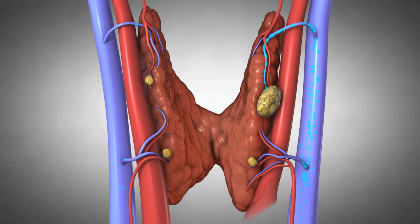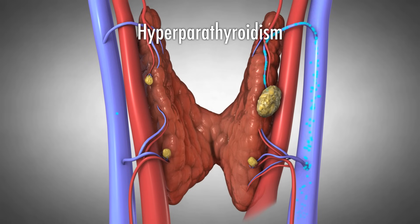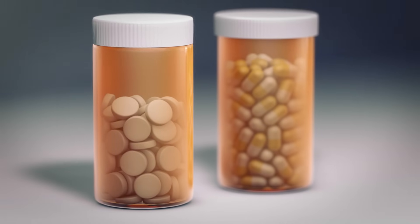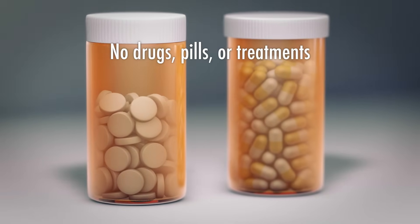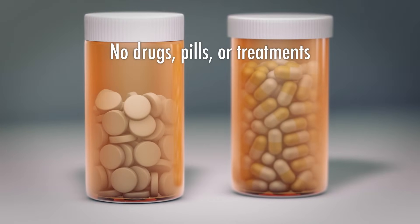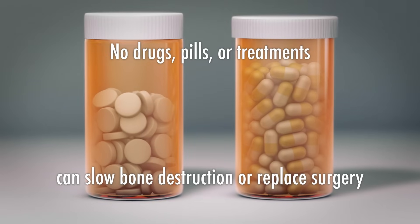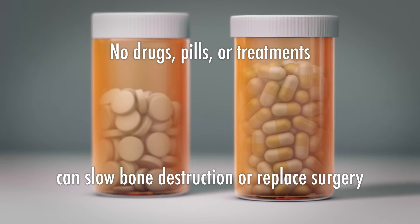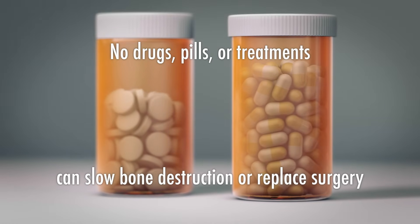It is estimated that untreated hyperparathyroidism can decrease a patient's life expectancy by five or six years, even when the calcium is only slightly elevated. There are no drugs, pills, or other treatments that can slow the process of bone destruction or take the place of surgical removal of the parathyroid tumor.